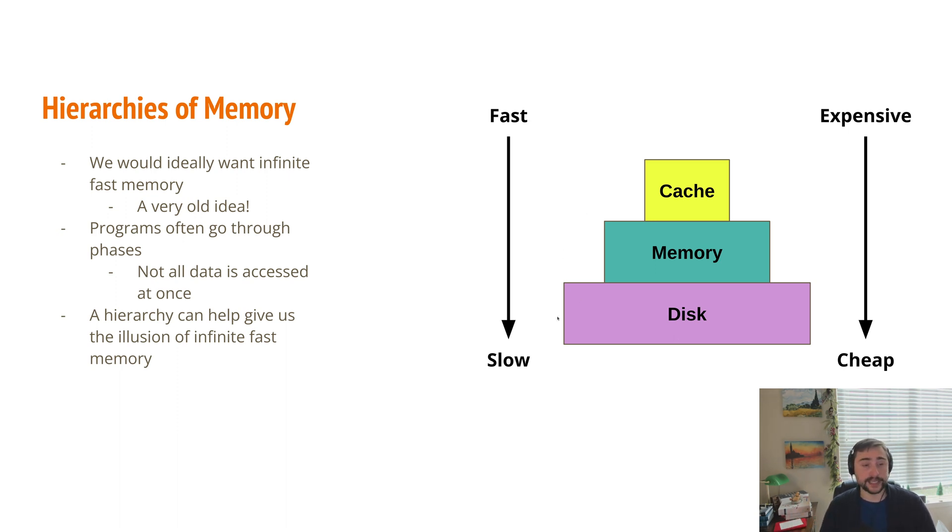So as long as our program is accessing a small working set or a relatively small working set at any given moment, we can fit most of that data inside of our cache or maybe inside of our cache and a little bit inside of our main memory. And then when we move into a different phase of our program, we can hopefully fit that working set of our data inside of our cache, inside of our main memory. So we don't need to have this infinitely sized cache. We can get away with this hierarchy of different kinds of memory.